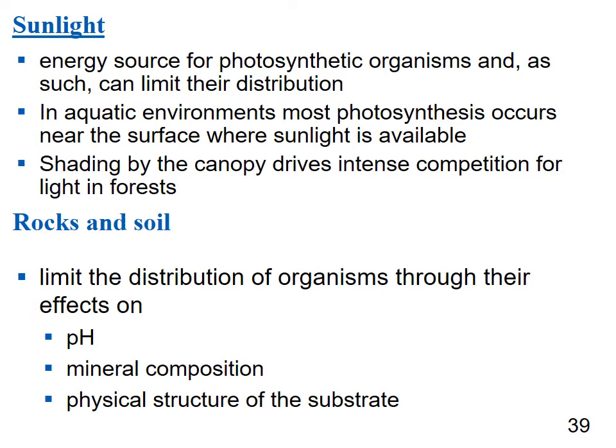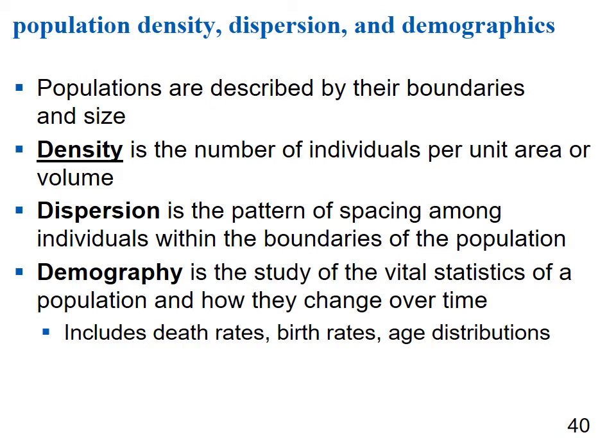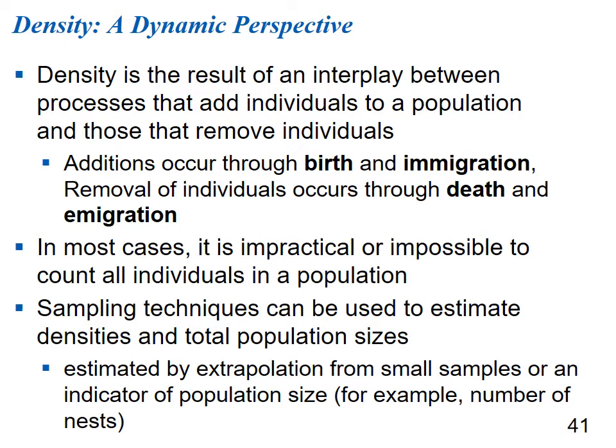Populations can be described by their boundaries and size. Density is the number of individuals per unit area or volume. Dispersion is the pattern of spacing among individuals within the boundaries of a population. Demography is the study of death rate, birth rate, and age distributions and how they change over time — called vital statistics. Density results from an interplay between processes that add individuals — births and immigration — and remove individuals — deaths and emigration.